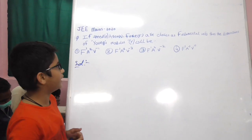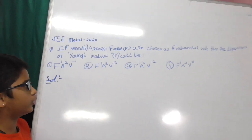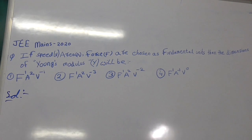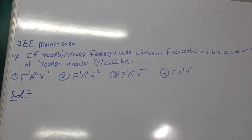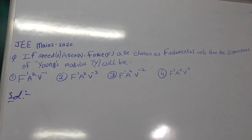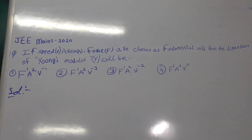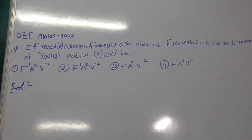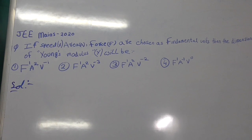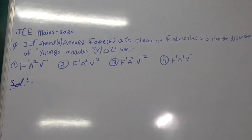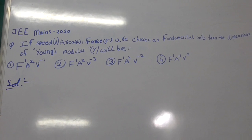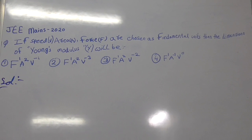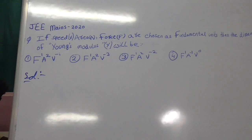If speed V, area A, force F are chosen as fundamental units, then the dimensions of Young's modulus Y will be: 1. F power 1, A power 2, V power minus 1. 2. F power 1, A power 2, V power minus 3. 3. F power 1, A power 2, V power minus 2. 4. F power 1, A power minus 1, V power 0.